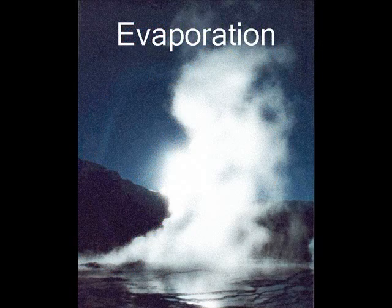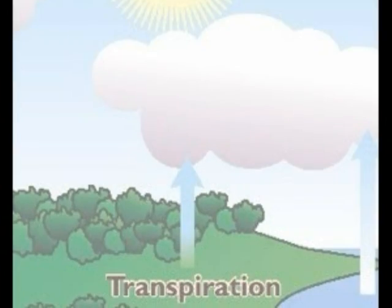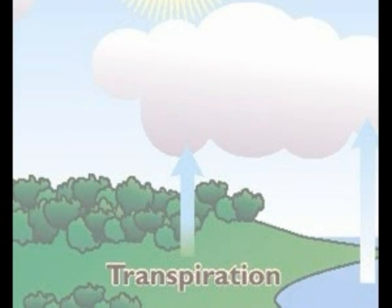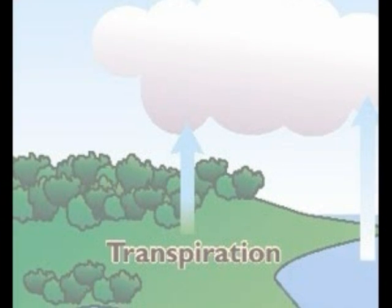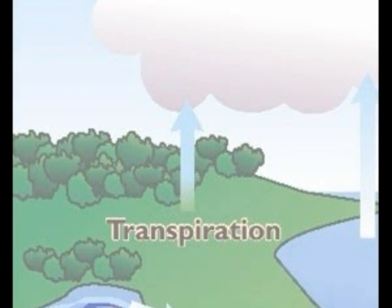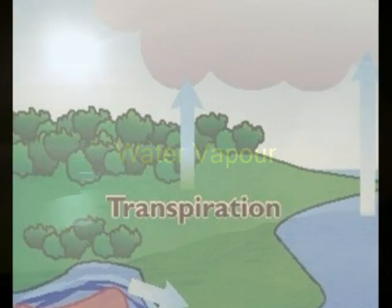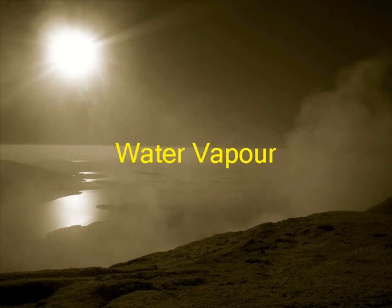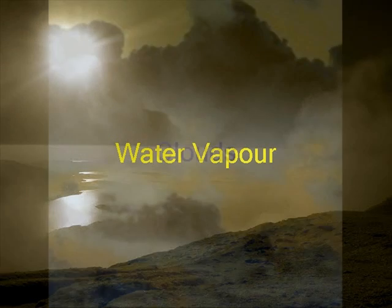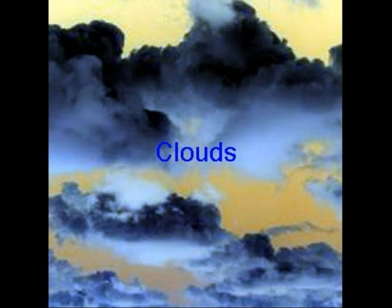The sun's heat causes evaporation from streams, lakes, oceans and rivers. Transpiration collects water from plants and it evaporates and turns into water vapor. It then changes into a gas called water vapor, which forms clouds, and it's called condensation. After it forms the cloud, it starts to precipitate.